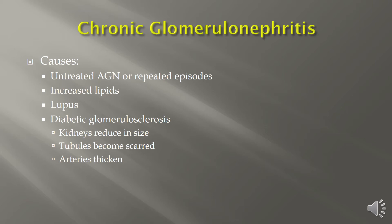Moving on to chronic glomerular nephritis. It most often occurs in patients who have untreated acute glomerular nephritis or repeated episodes of it. Contributing factors include significantly increased lipids, lupus, and diabetic glomerulosclerosis — which involves kidneys becoming reduced in size, tubules becoming scarred, and the arteries of those tubules becoming thickened.